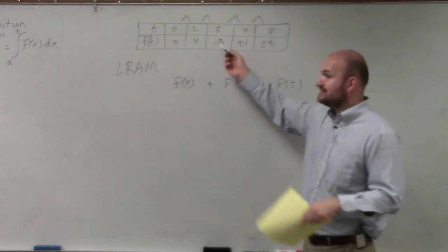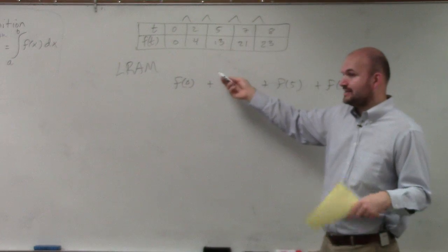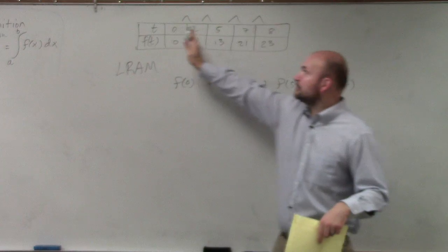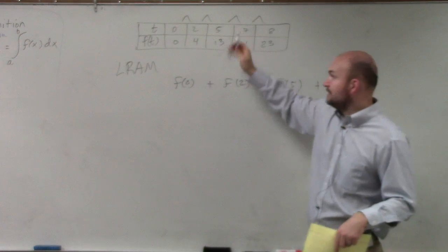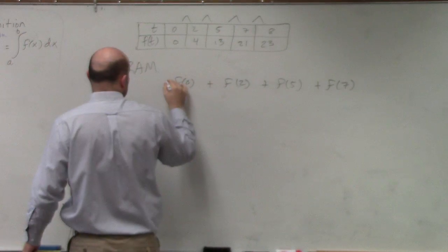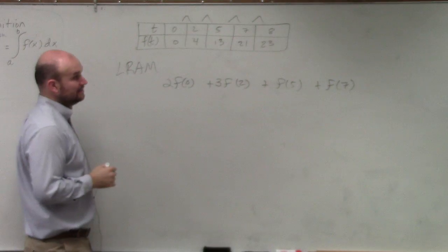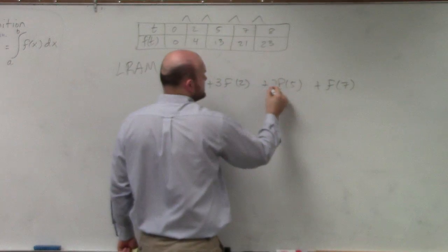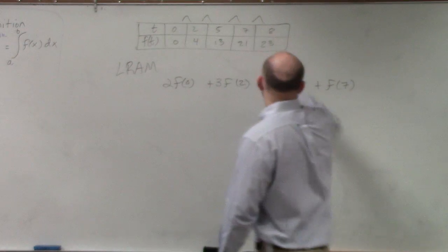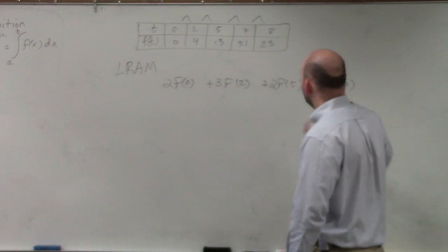Because now what we notice is the difference between these rectangles is not the same. Remember, you're going from 0 to 2, right? So that's going to have a width of 2. Then you're going from 2 to 5, which now has a width of 3. You're going from 5 to 7, which has a width of 2. And then you're going from 7 to 8, which has a width of 1.